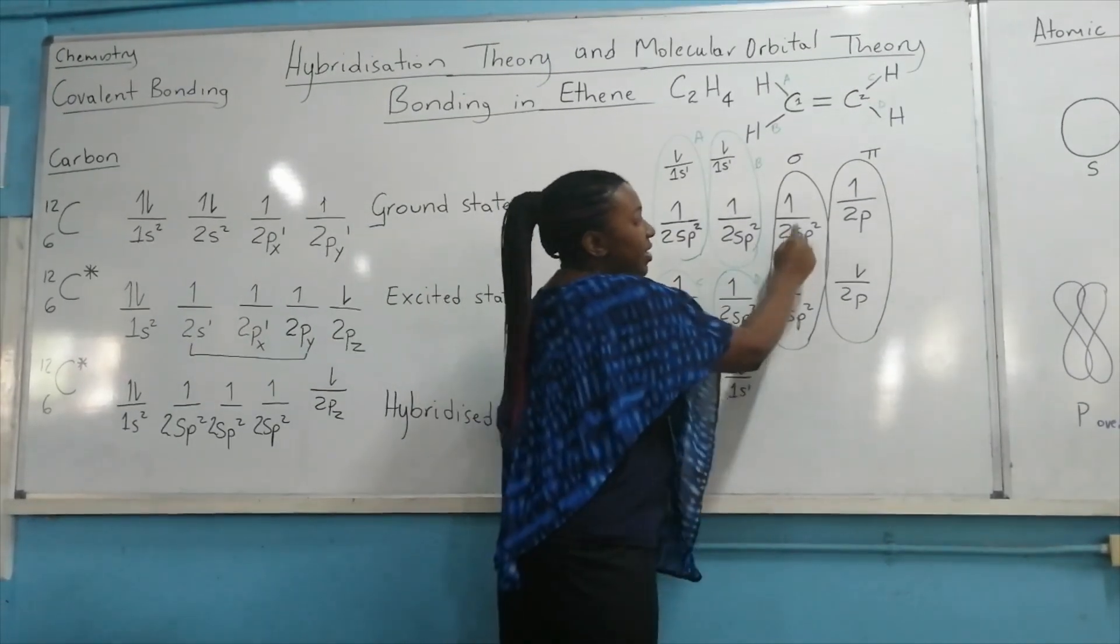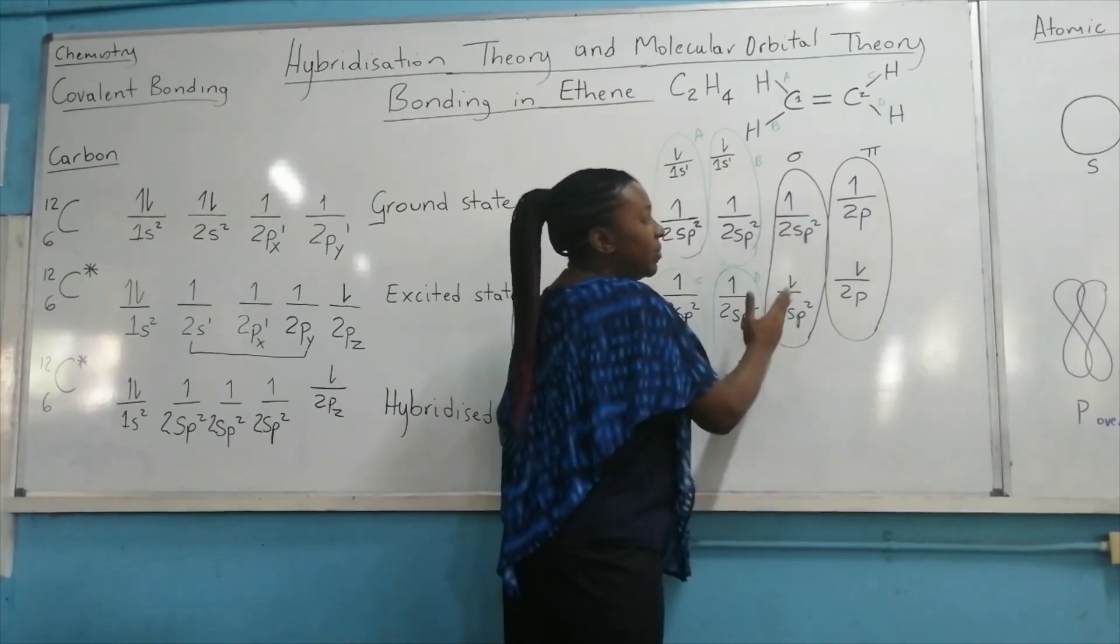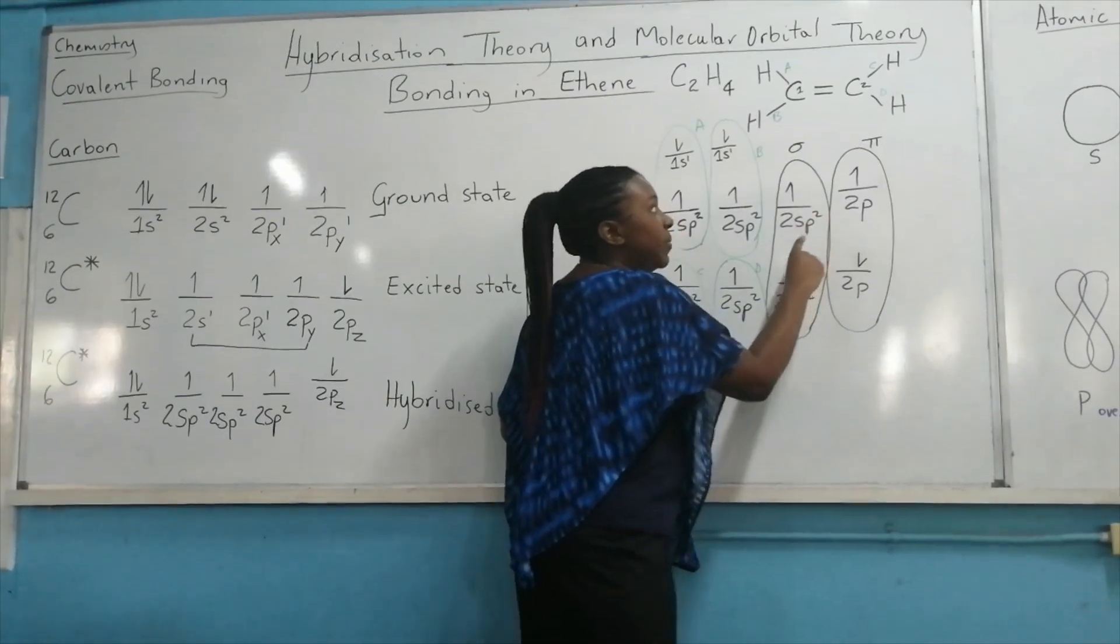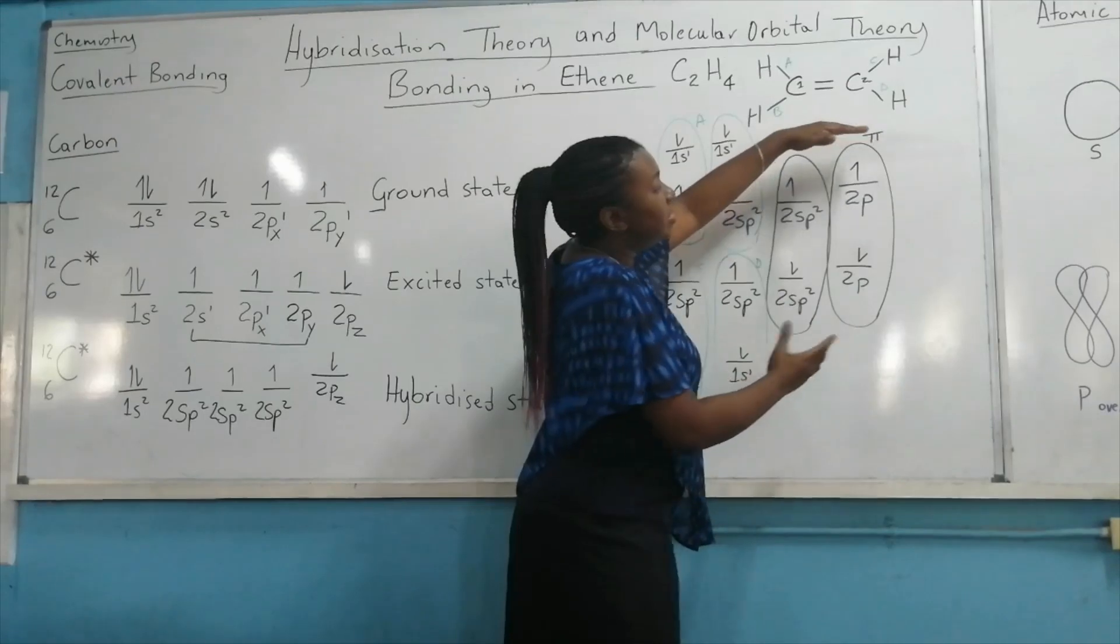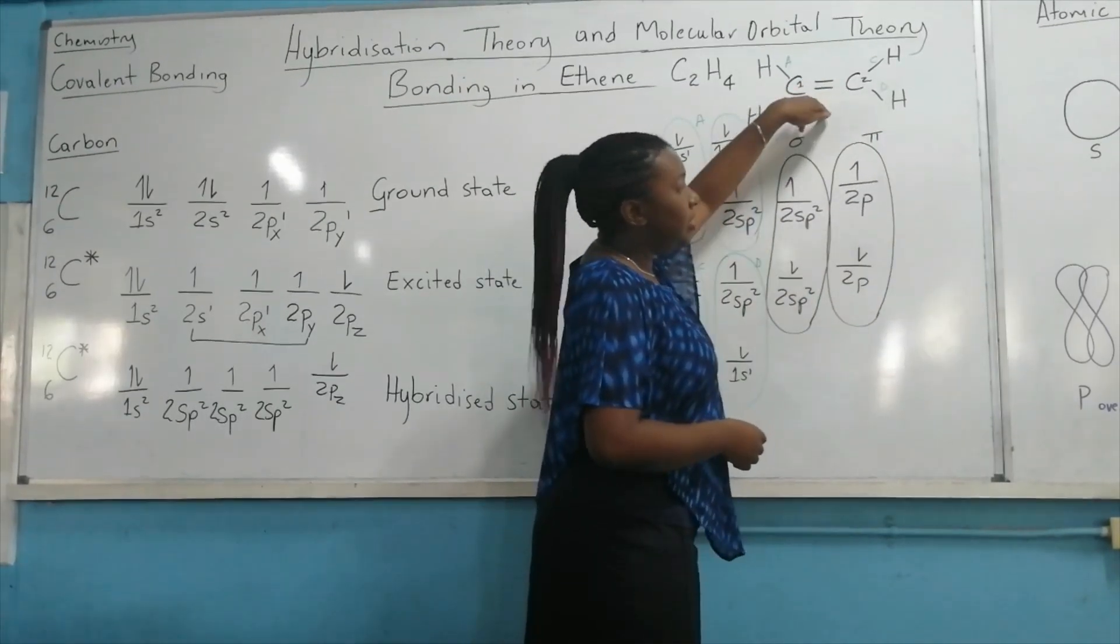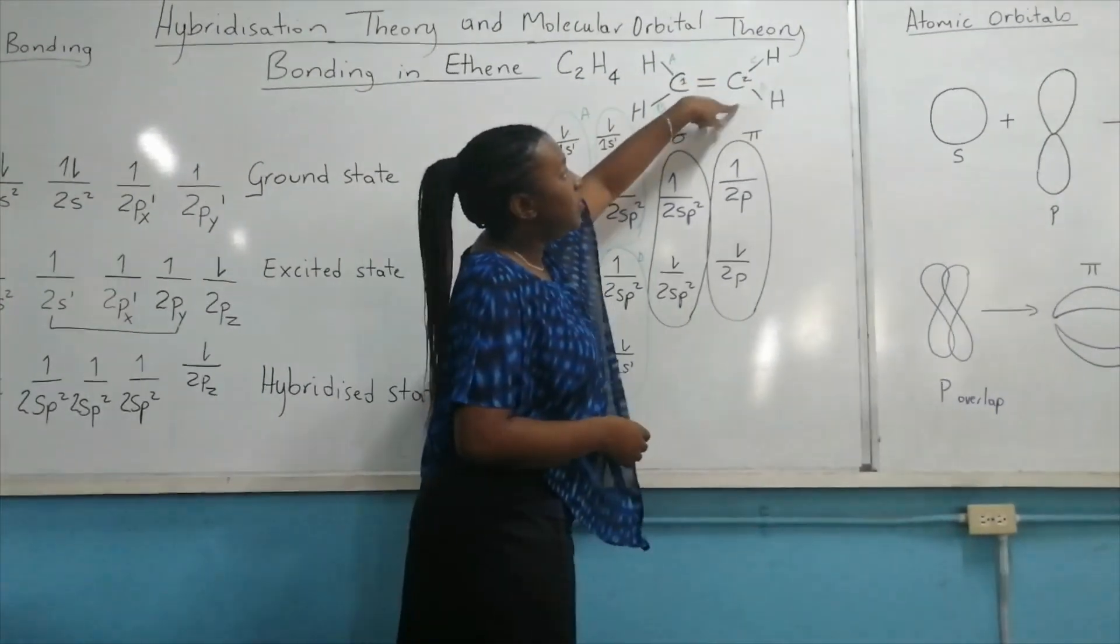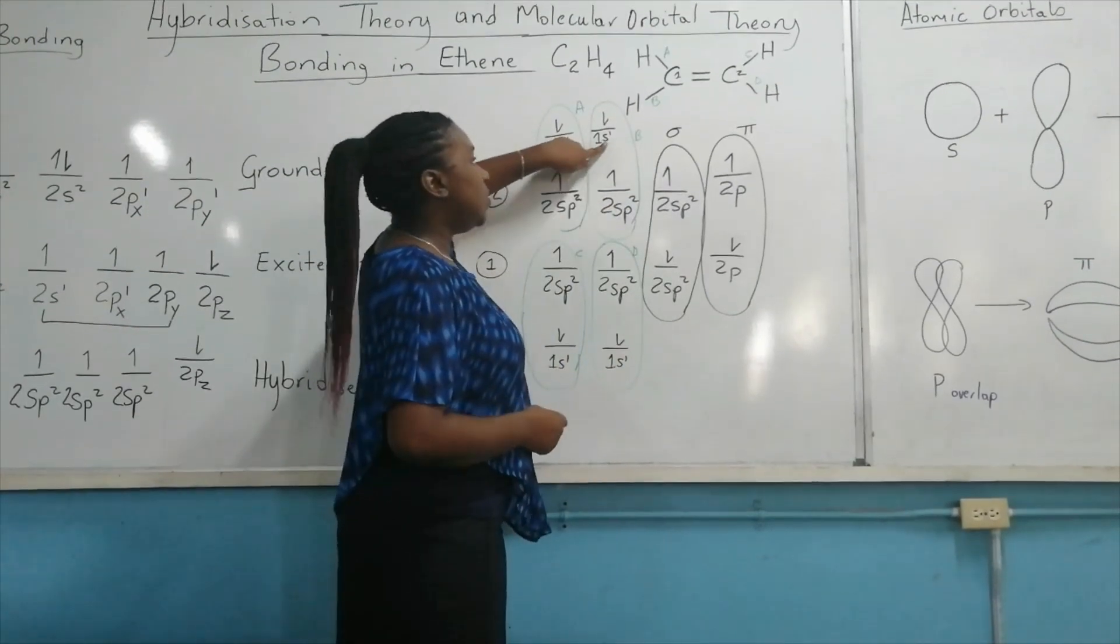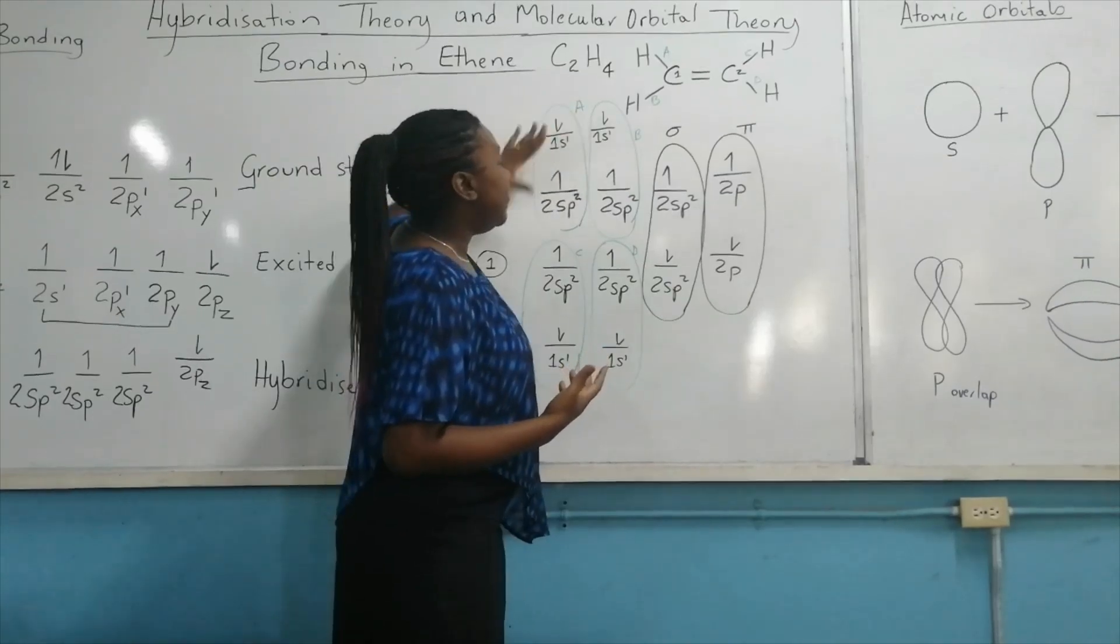If two of these atomic orbitals, the sp², that is, overlap for two different carbon atoms, then we can say that these two will overlap now to form the sigma bond in the double bond. If the 2p orbitals overlap partially, then we form the pi bond in the double bond. These single bonds right here with the hydrogen, they're formed when the sp² overlaps with a 1s for a hydrogen atom. So we have four of them.